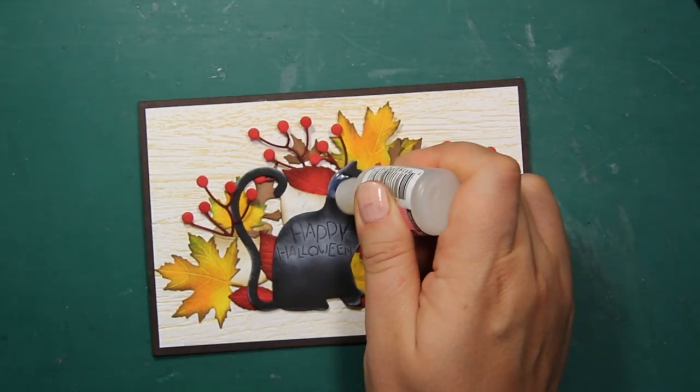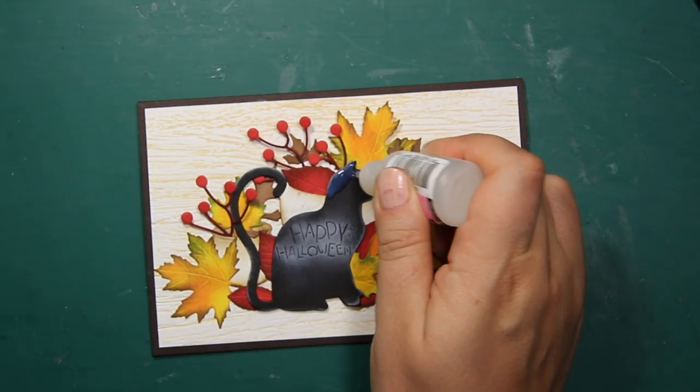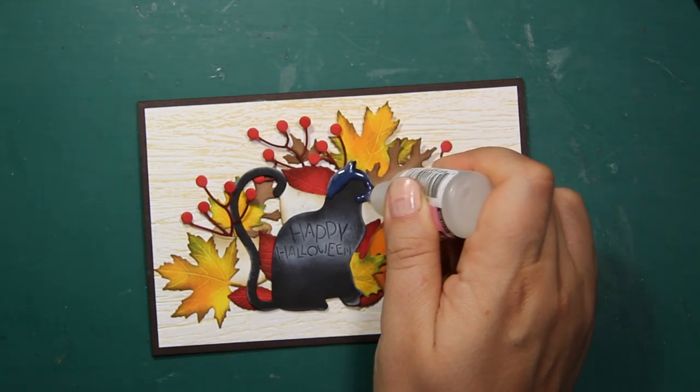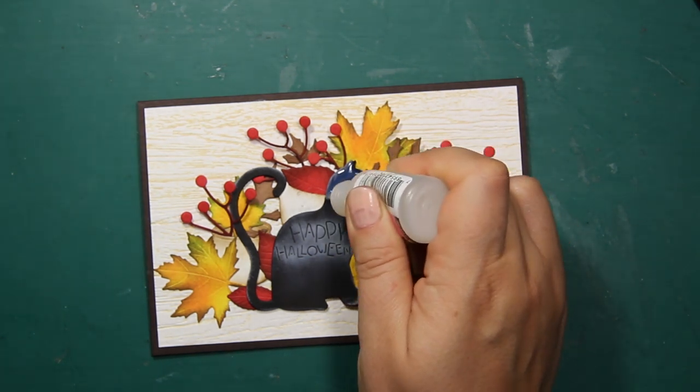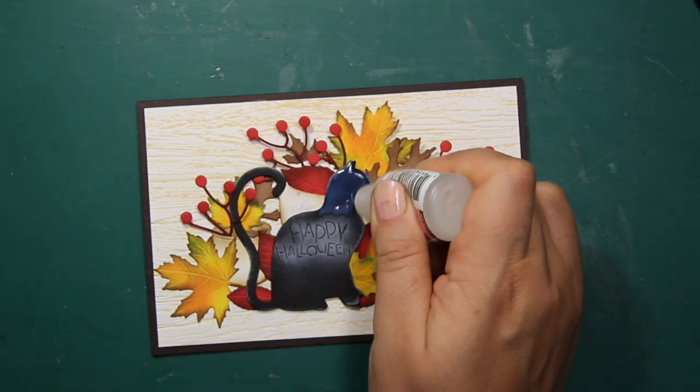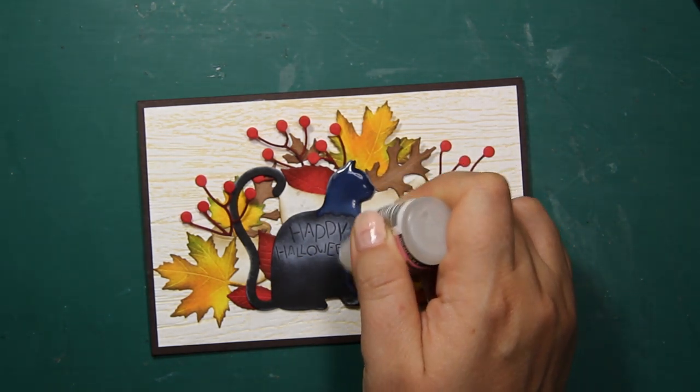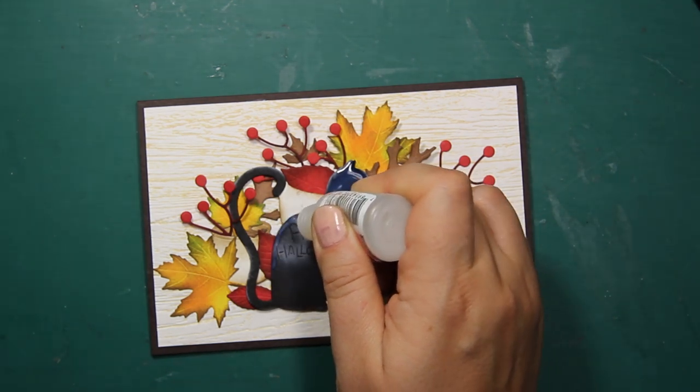At this point I have decided to add some more interesting texture to the focal image. So I'm applying glossy accents all over the cat die cut. I'm adding quite a generous amount of glaze, and then I'm going to leave it to dry for a few hours.